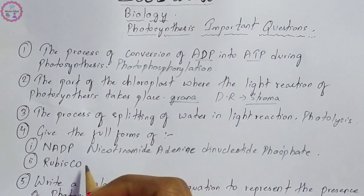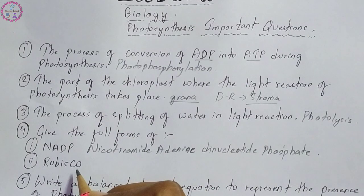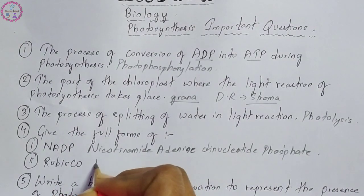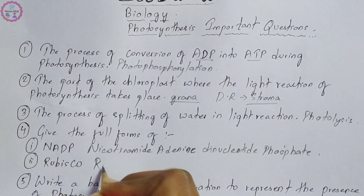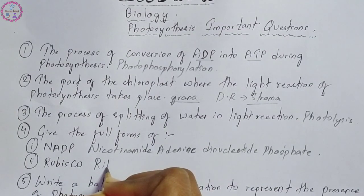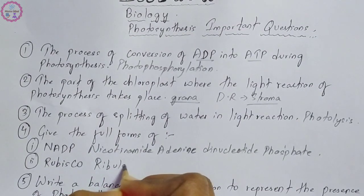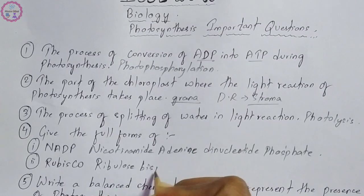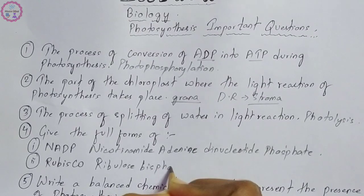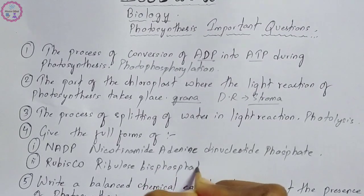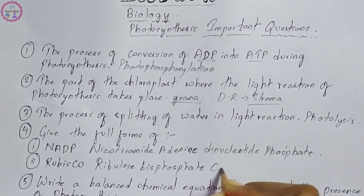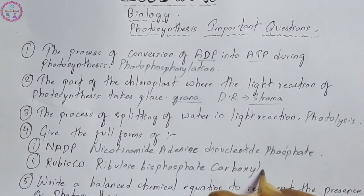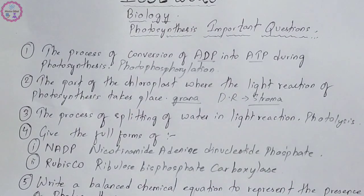The next full form you have to write is of Rubisco. This is also important. The full form of Rubisco is ribulose bisphosphate carboxylase.